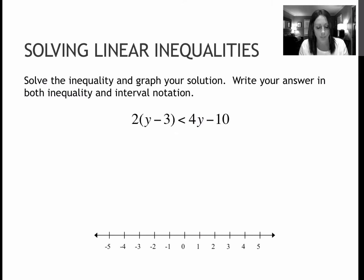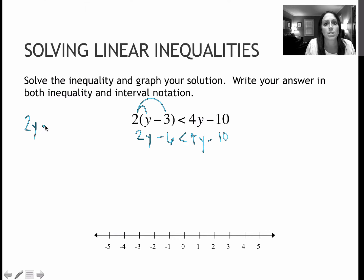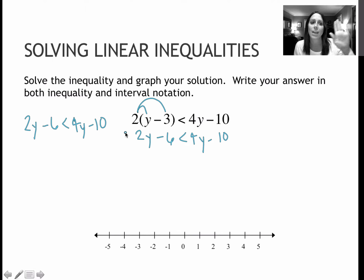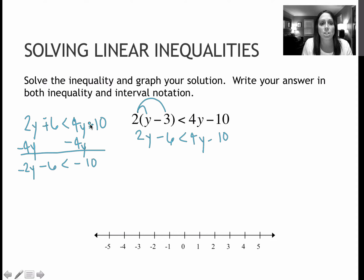Our next question, we are solving this inequality that's a little bit more difficult. I'm going to start by distributing that 2: 2 times y is 2y, and 2 times 3 is 6. From here I really have two choices, so I'm going to solve this in two different ways. My first way is to always get the y — or whatever the variable is — to the left side of my equation. So I'm going to subtract 4y from each side, and when I do that I get negative 2y minus 6 is less than negative 10. Make sure you keep that negative with the 10.